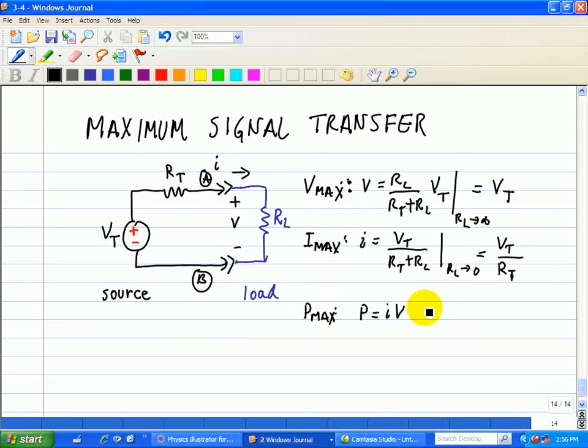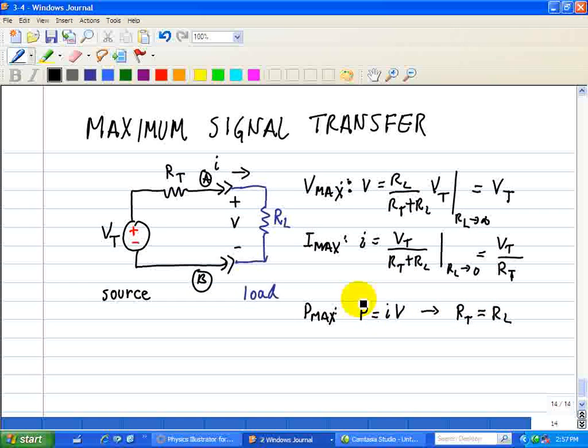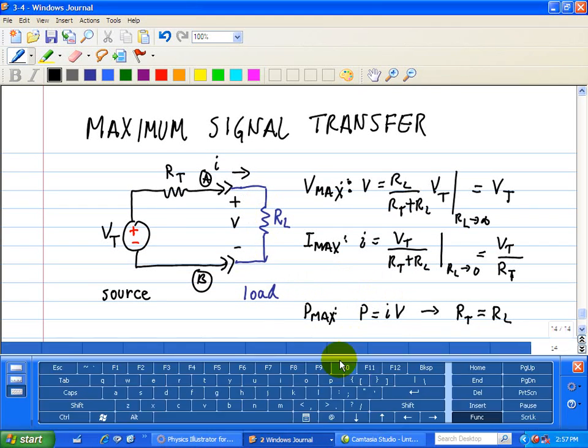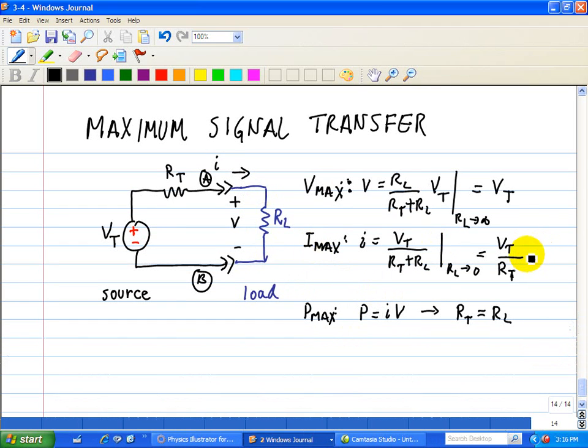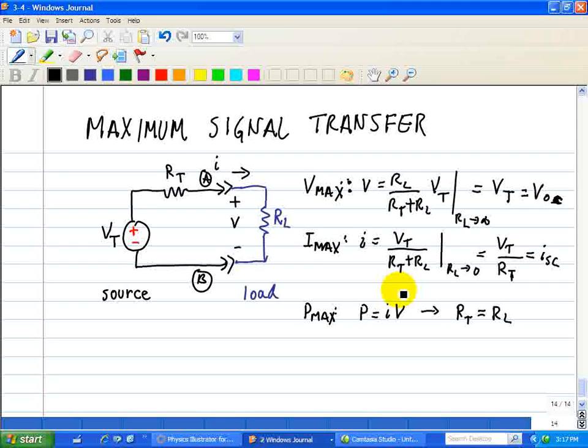So here intuitively, we can say that in order to maximize the power, we need to maximize the current and need to maximize the voltage. And that implies, and we'll see analytically, we're just doing an intuitive approach, that RT is equal to RL, and that's where we maximize the power associated with this circuit. So we see that to maximize I max, this has to be a short circuit. And we want to maximize V max, this has to be an open circuit.